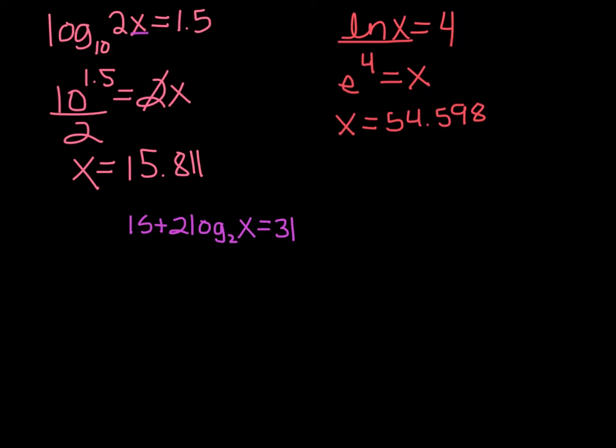So here's a messier one. Remember you have to isolate the logarithm before you can change it to an exponential. So first I need to subtract 15, 2 log base 2 of x equals 31 minus 15 is 16. And then I need to divide off the 2,